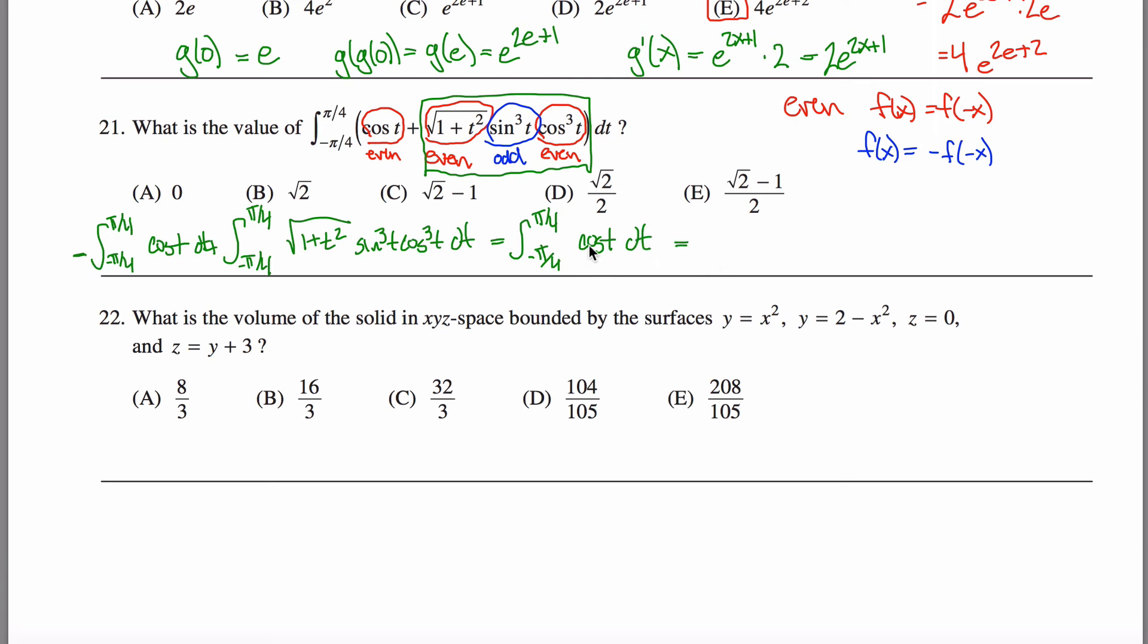So to evaluate this integral, well, I guess maybe I'm showing off here. You can take advantage of the fact that this is even. So the area from negative π over 4 to 0 is the same as the area from 0 to π over 4. So I could say this is twice the integral from 0 to π over 4 of cosine of t dt.